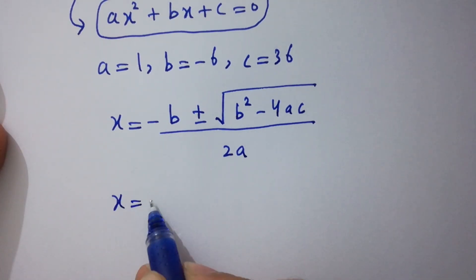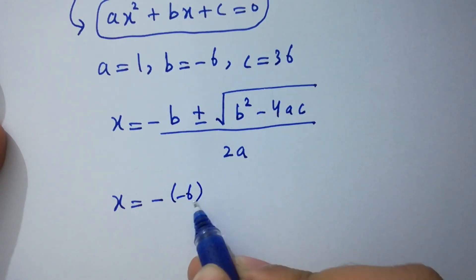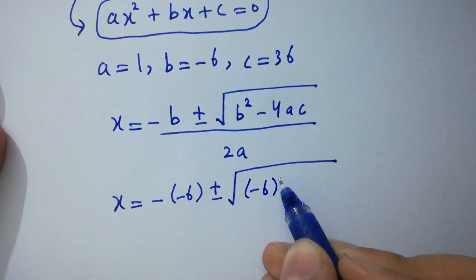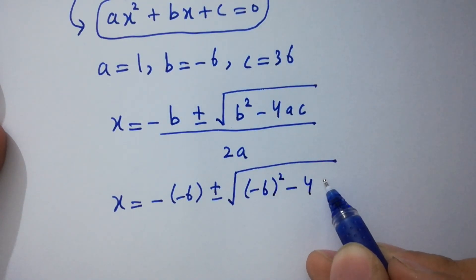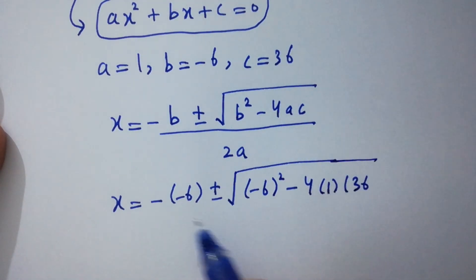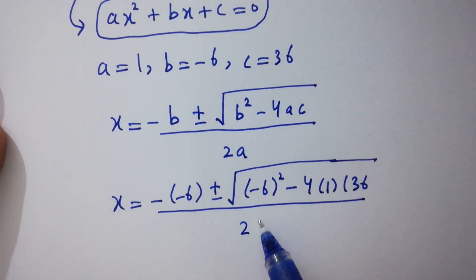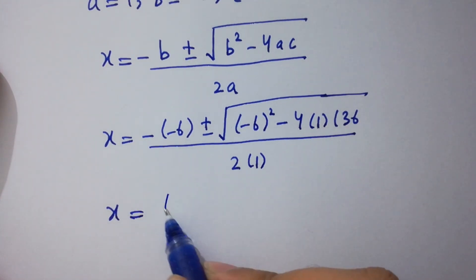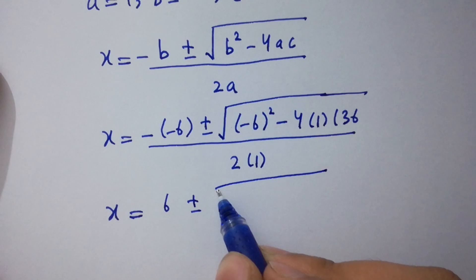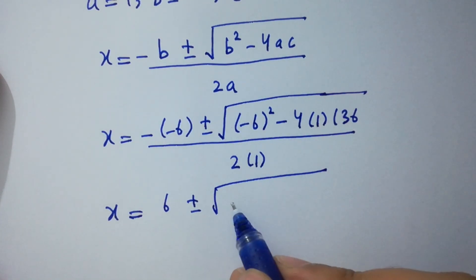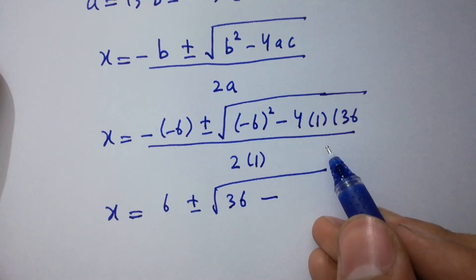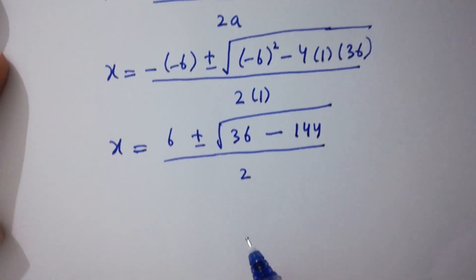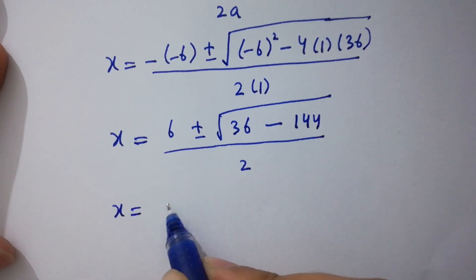Substituting: x equals negative (minus 6) plus or minus square root of (minus 6) squared minus 4 times 1 times 36, all over 2 times 1. This gives x equals 6 plus or minus square root of 36 minus 144, over 2. Since 4 times 36 equals 144, the discriminant is 36 minus 144 equals negative 108.